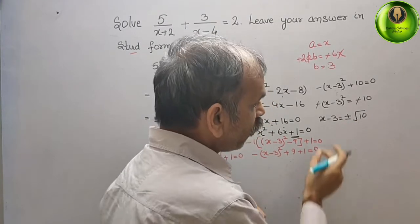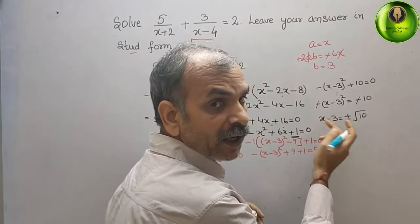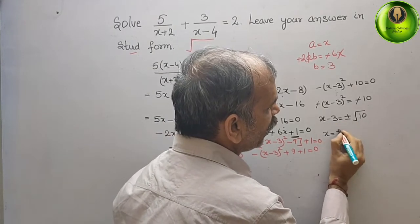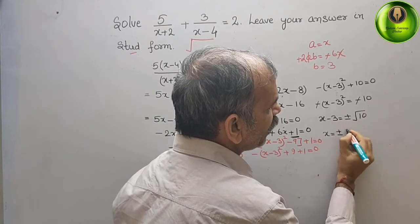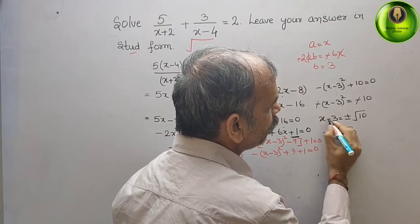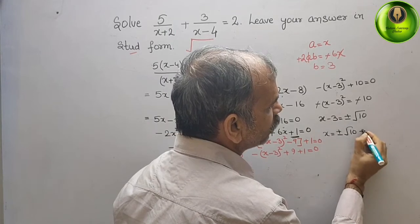So what is our answer for x? x = 3 ± √10. One time we take the plus value giving x = 3 + √10, and the other time we take the minus value giving x = 3 - √10.